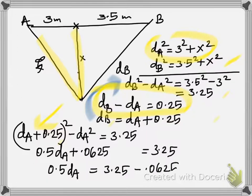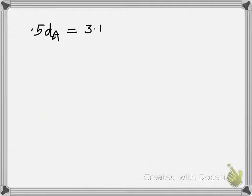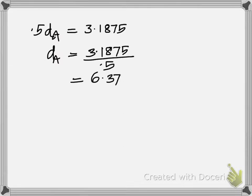You get this, and finally, 0.5 d_A is 3.1875. So d_A is 6.375, which is the final answer.